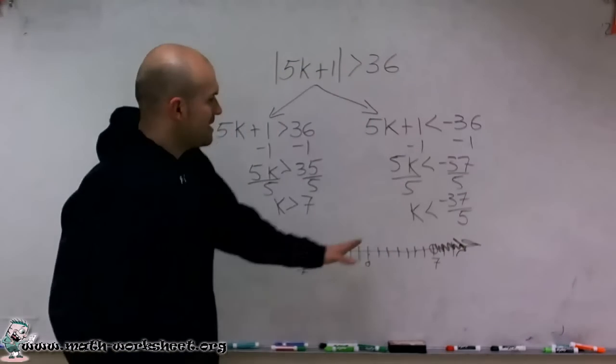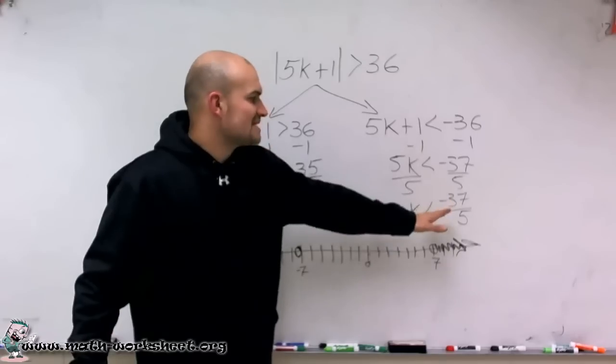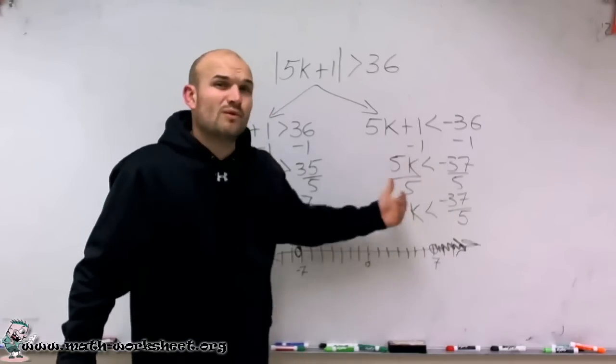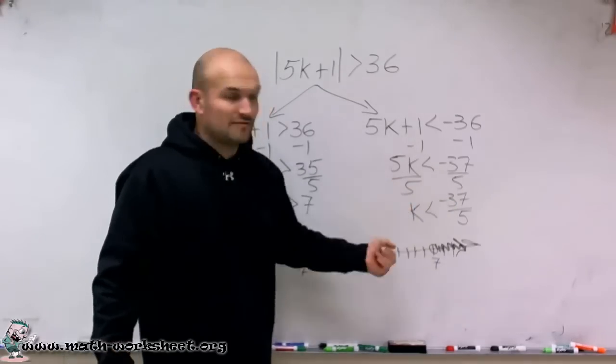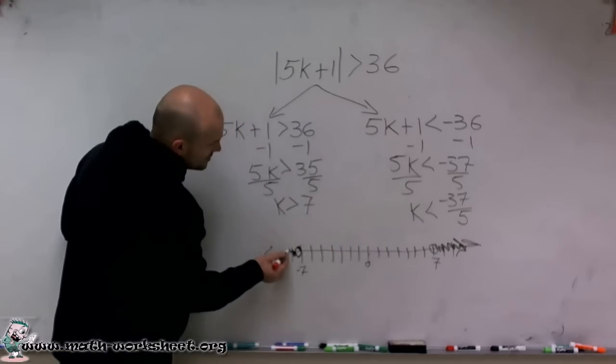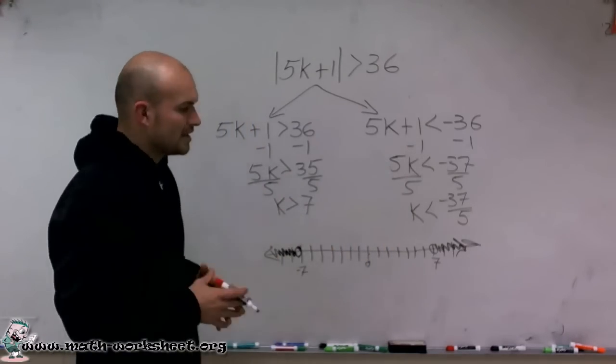Then we look at k is less than negative 37 divided by 5. So what values are smaller than negative 37 divided by 5? And that's going to be all the values to the left from here.